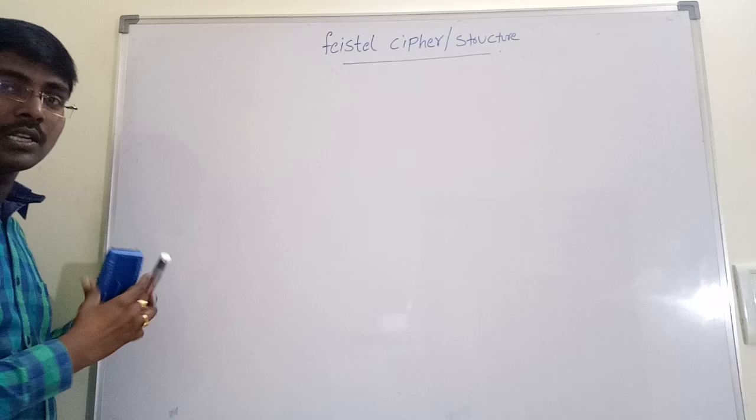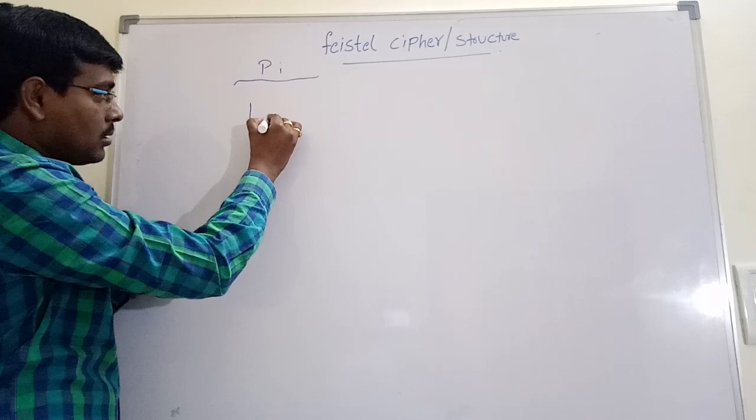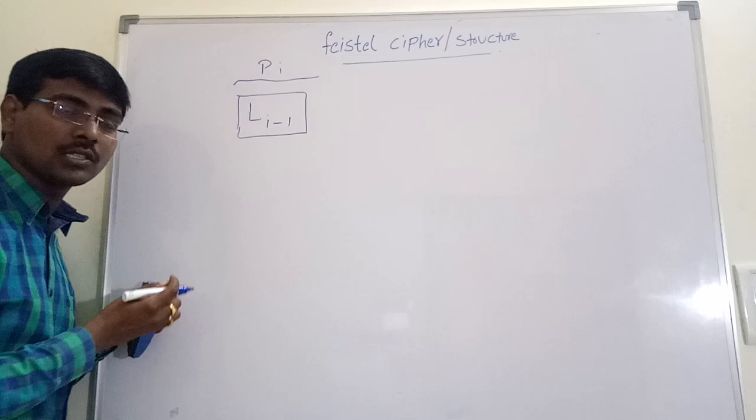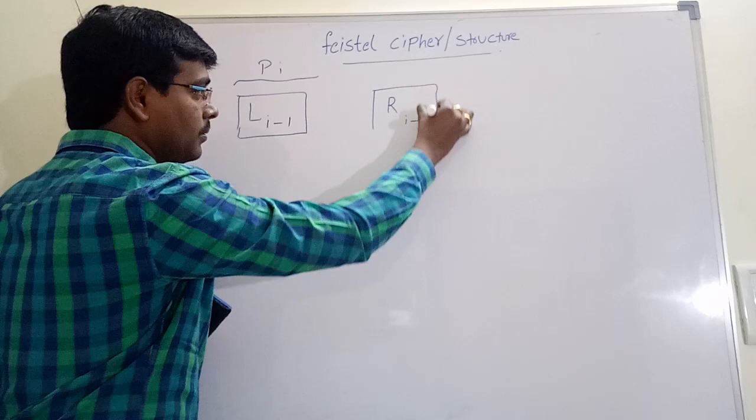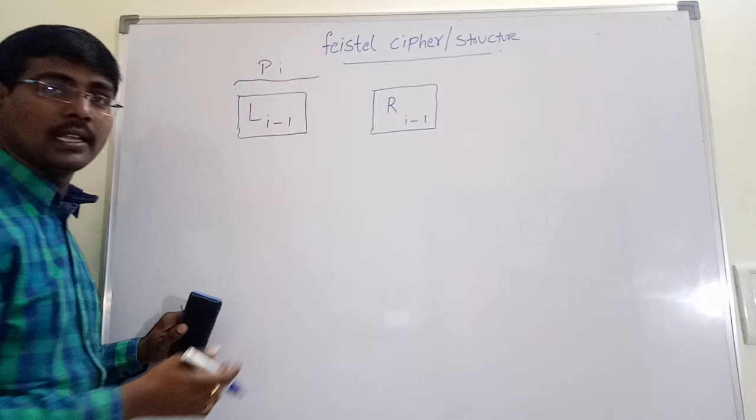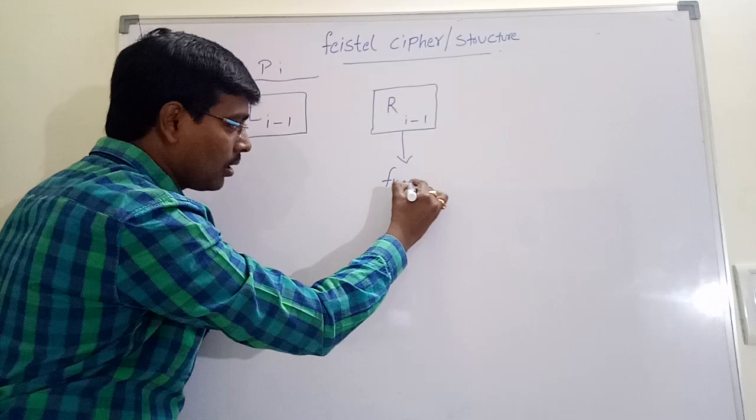If the plain text is divided into two halves, suppose the first half is represented, that is, left half is represented as Li-1, and right half is represented by using Ri-1. According to Feistel Cipher, these parts and these parts contain same number of bits. Perform some operation on right half.